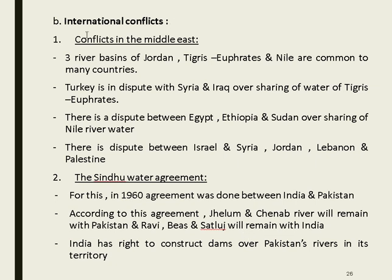International conflicts include disputes in the Middle East over three river basins: Jordan, Tigris-Euphrates, and Nile. Turkey disputes with Syria and Iraq over Tigris-Euphrates; Egypt, Ethiopia, and Sudan dispute over the Nile; Israel, Syria, Jordan, Lebanon, and Palestine dispute over the Jordan river. The Indus Water Agreement between India and Pakistan assigned the Jhelum and Chenab rivers to Pakistan, while Ravi, Beas, and Satluj remain with India, though India has the right to construct dams on Pakistan's rivers in its territory.